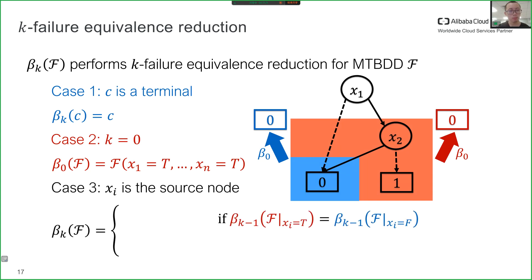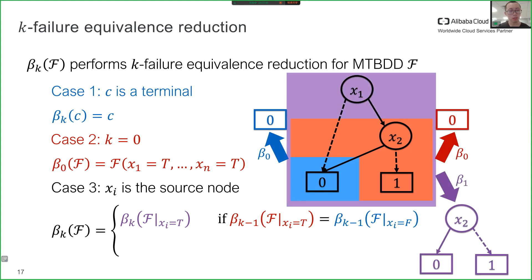Third, if k minus 1 failure equivalence reduction of two sub-MTBDDs provides the same result, as in the example where the blue and red arrows point to the same MTBDD, the source node can be removed to obtain a simpler MTBDD, as shown by the purple arrow in the example. Otherwise, we perform equivalence reduction recursively for sub-MTBDDs.